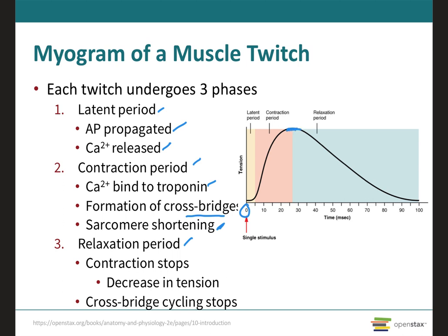During the relaxation period, which also lasts about 10 to 100 milliseconds, calcium is actively transported back into the sarcoplasmic reticulum, the myosin binding sites are covered again by tropomyosin, the myosin heads detach from the actin, and the tension in the muscle fiber decreases. The actual duration of these periods depends on the type of muscle fiber, which will be covered in the next learning outcome.